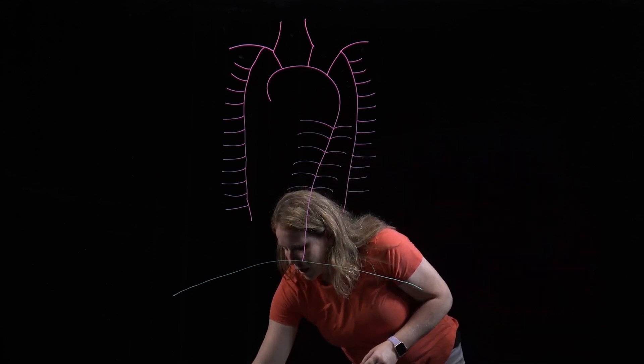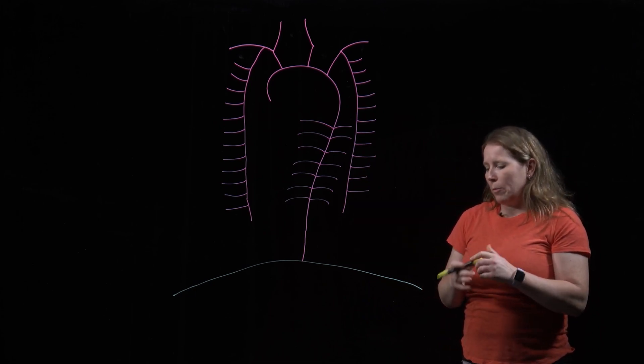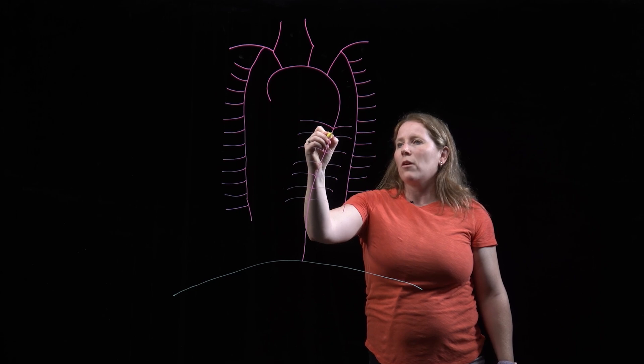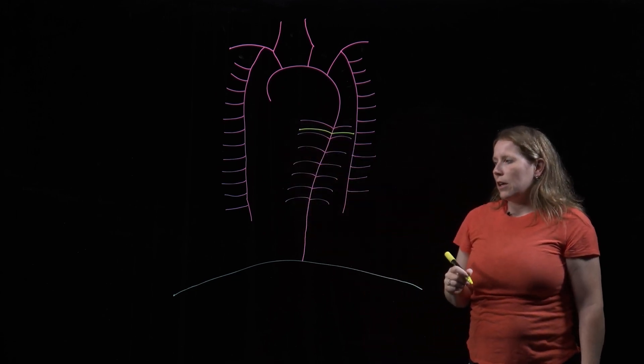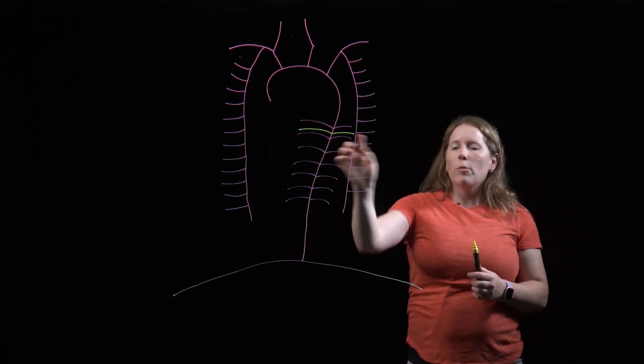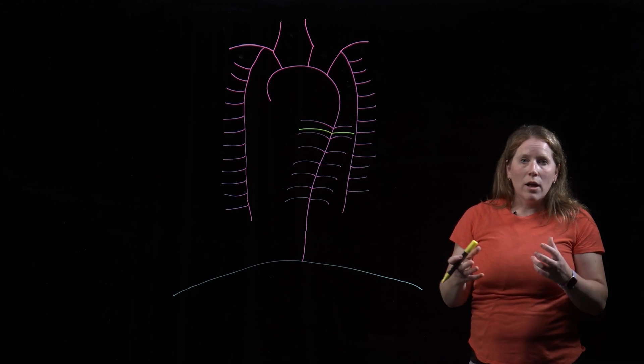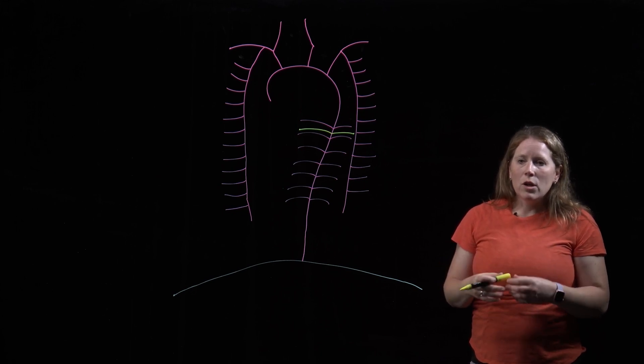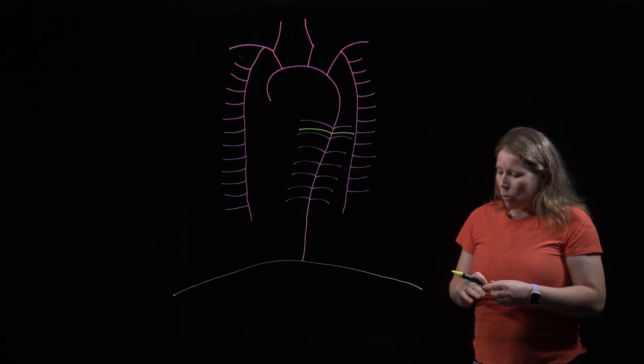I'm going to change colors now just to highlight some other arteries that show up here. So we're going to have a pair of arteries coming off around here off the thoracic aorta, and these are what we call bronchial arteries. Bronchial arteries are the arteries that go to the lungs and supply the lungs with its own source of oxygen and nutrient-rich blood, so they're very important.